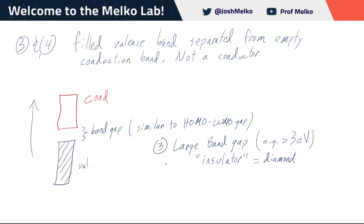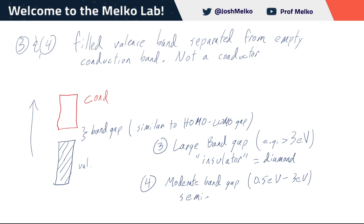If the band gap is something more moderate — maybe 0.5 eV to 3 eV or so — we call this a semiconductor. These are the four different types of band scenarios. This is something like silicon. It's a semiconductor because we might be able to bridge this gap by raising the temperature, so it might have some tunability in terms of its conductivity.